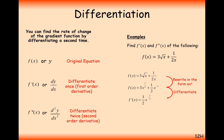Differentiating: one half times 3 gives 3 over 2, x to the minus one half. Then minus 1 times one half gives minus one half, x to the minus 2. So that's the first order derivative. To find the second order derivative we just differentiate again.